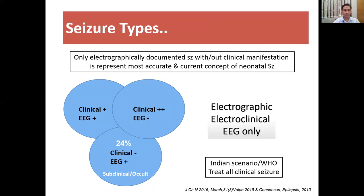That is why the American Neurological Society has defined that only electrographically documented seizures with or without clinical manifestations represent the most accurate and current concept of neonatal seizures. They have defined seizures in three parts: first, electroclinical, where clinical symptoms are present along with EEG findings; second, only clinical seizures where there are no EEG findings; and third, subclinical or occult seizures where EEG is positive but there are no clinical findings, contributing up to 24% of cases. However, in the Indian scenario, we follow WHO guidelines where we treat all clinical seizures because of the scarcity of pediatric neurologists and availability of amplitude EEG or video EEG.